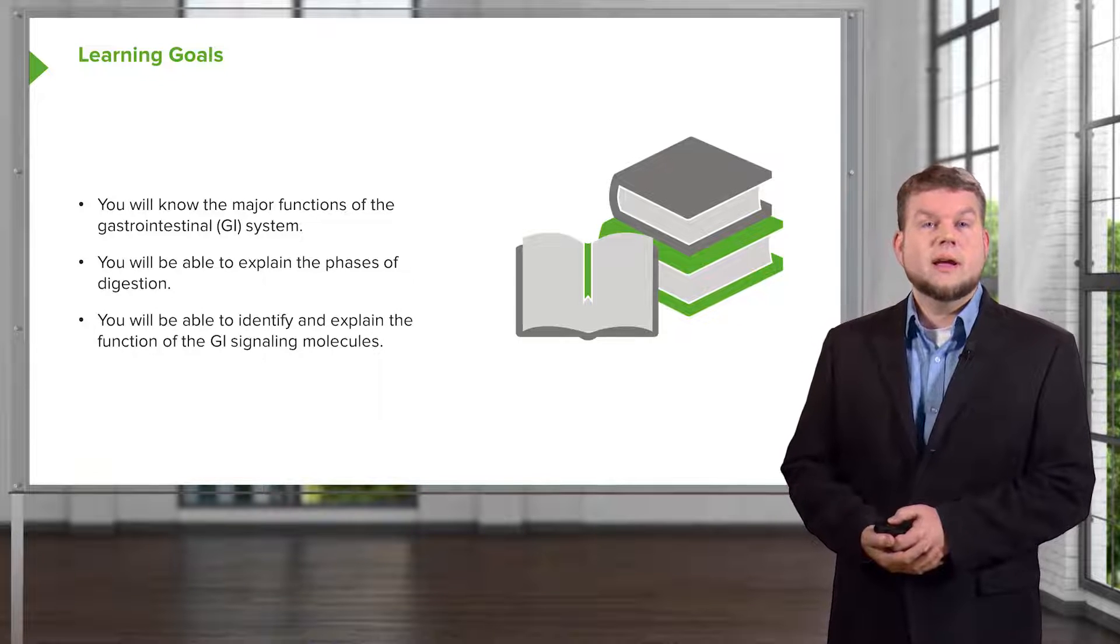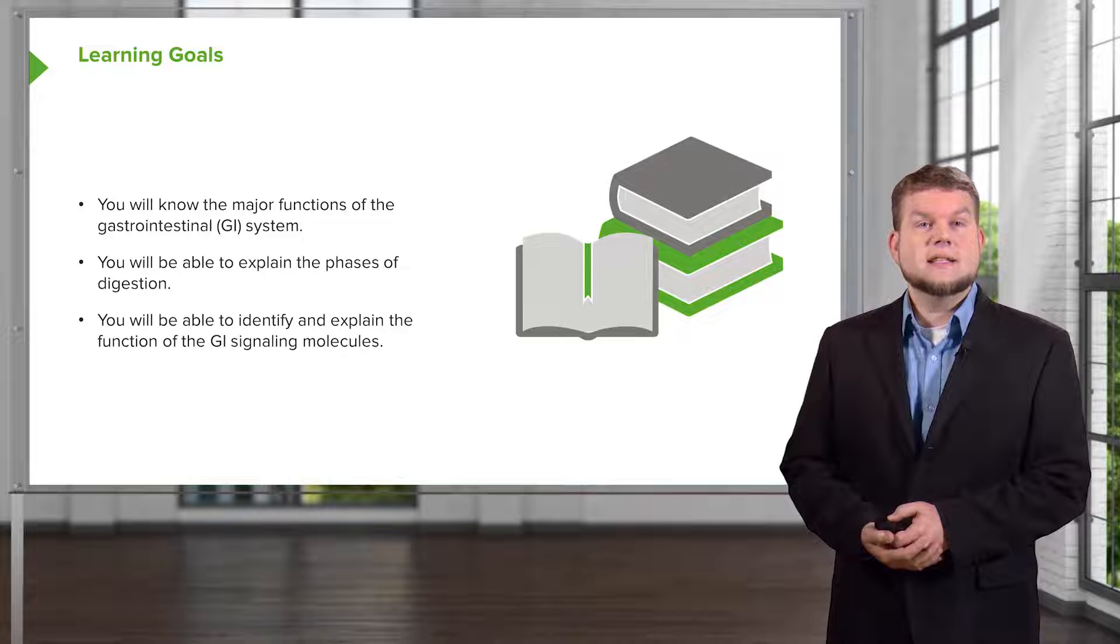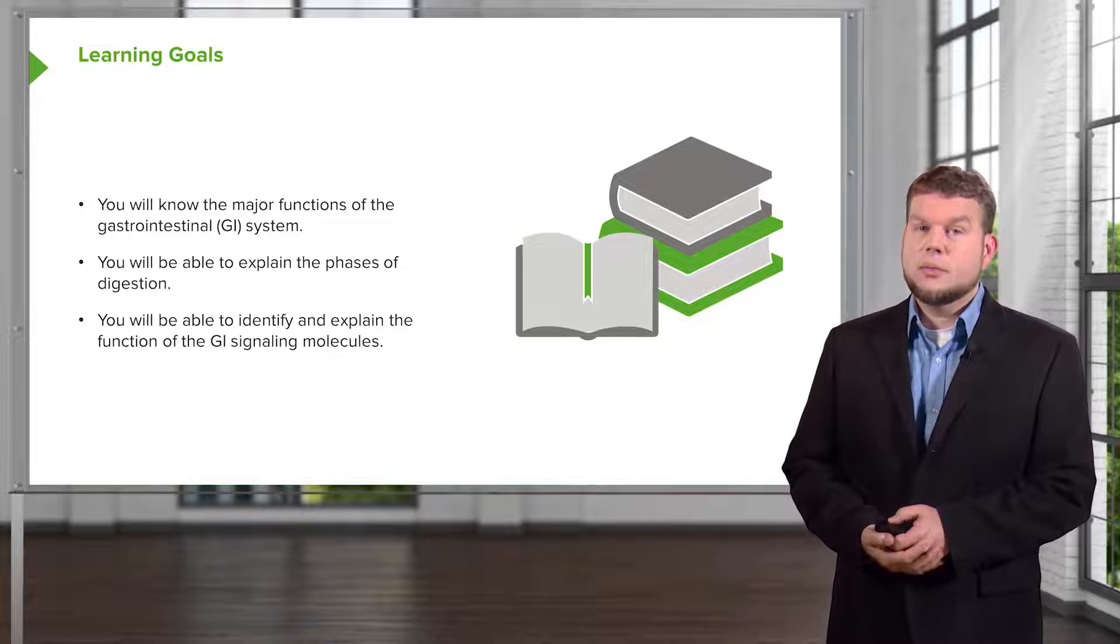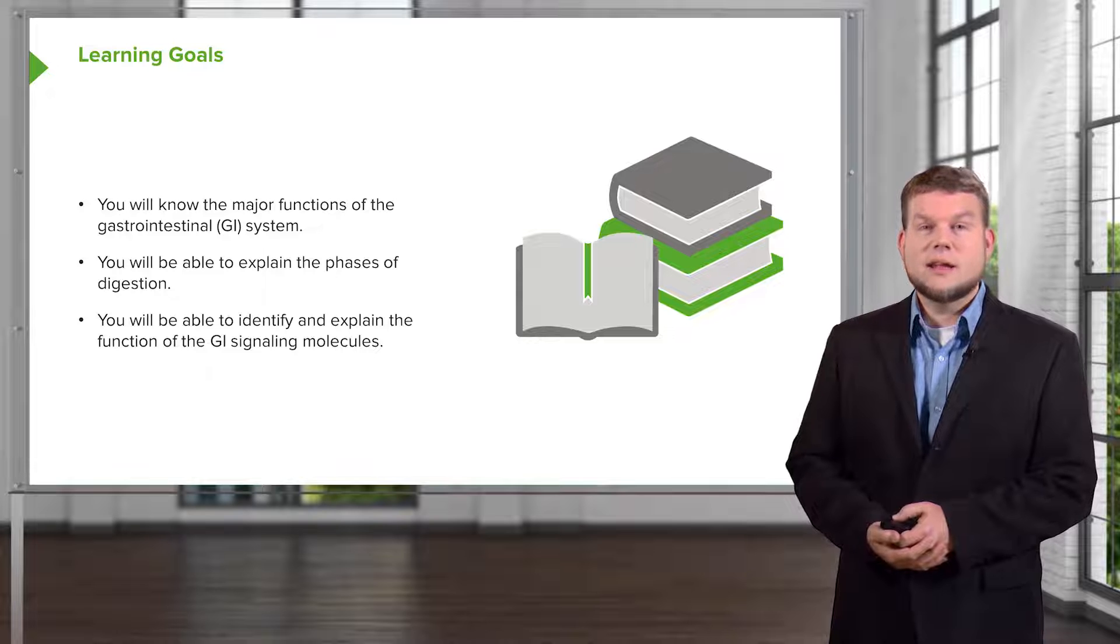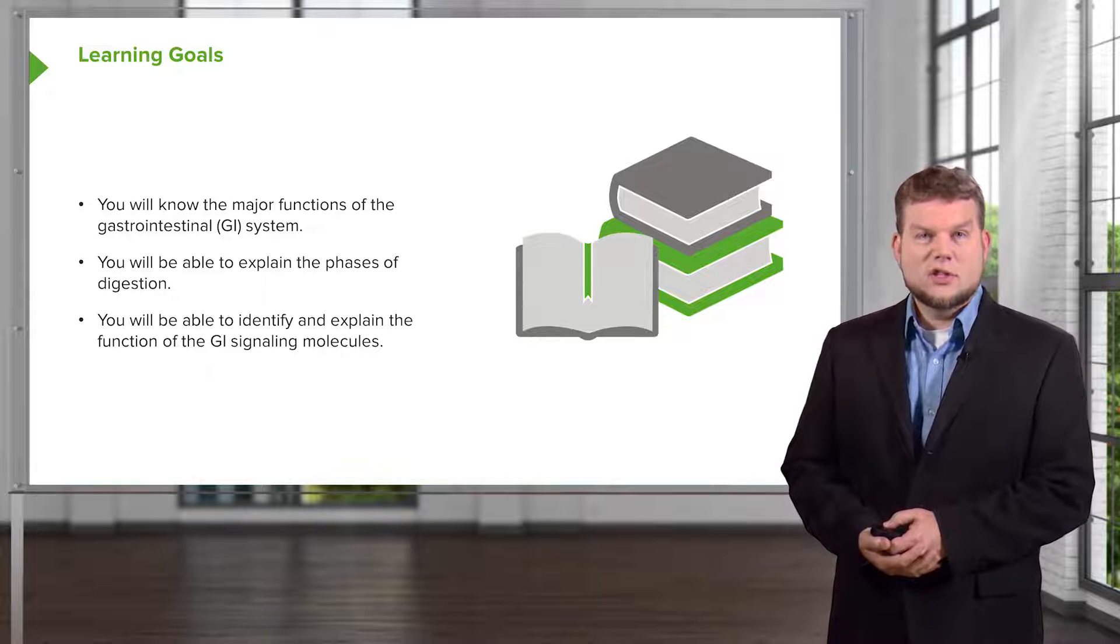Furthermore, we'll be able to identify and explain the function of GI signaling molecules, and there are three primary types. That includes the neurocrines, paracrines, and finally, and maybe most importantly, the GI hormones.